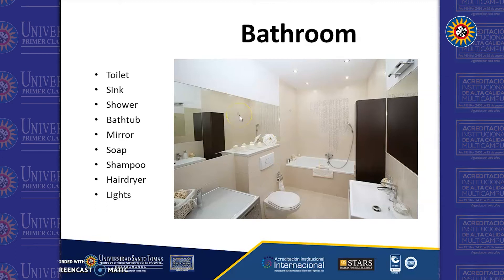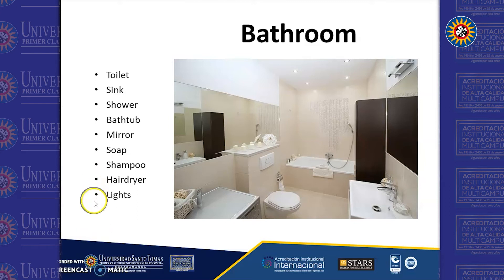And some of the objects we use to clean our bodies, like soap, shampoo, and hair dryer. Hair dryer is actually a machine. And lights at the top.